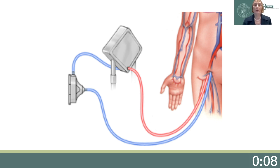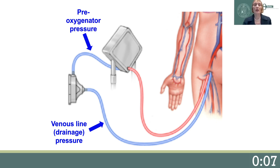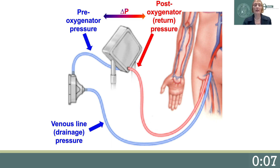The four key pressures to monitor in the ECMO circuit are: number one, the venous inflow or drainage pressure; number two, the pre-oxygenator pressure; number three, the post-oxygenator or return pressure; and the delta P or trans-oxygenator pressure. Failure to identify abnormalities in these four pressures and recognize interventions to resolve them can lead to sudden ECMO circuit failure and clinical catastrophes such as embolic stroke.